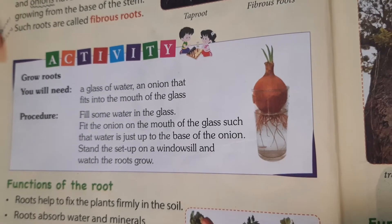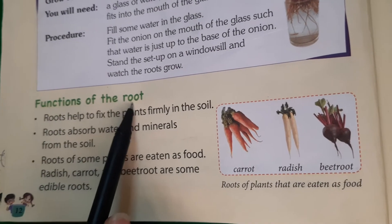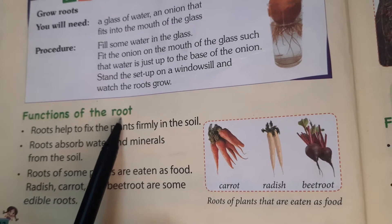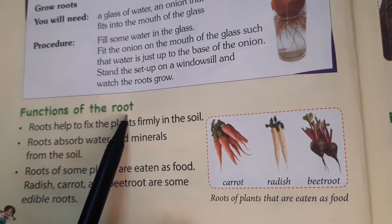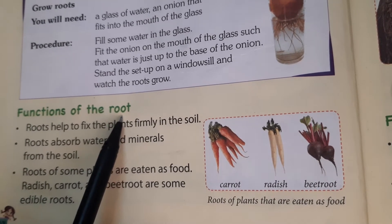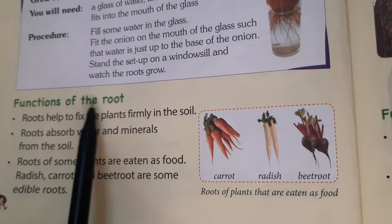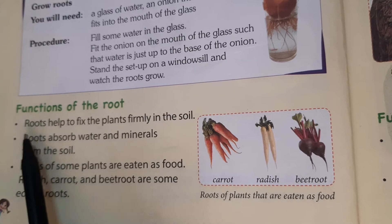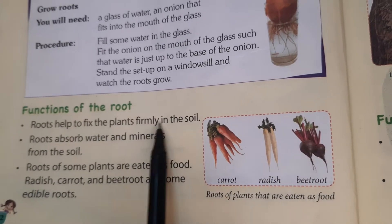Now the next part of the chapter covers the functions of roots. We have studied the types of roots — tap root and fibrous roots. Now we will study the functions of roots. The first function of roots is: roots help to fix the plant firmly to the soil. This means the roots anchor the plant into the soil so that it stays in place.